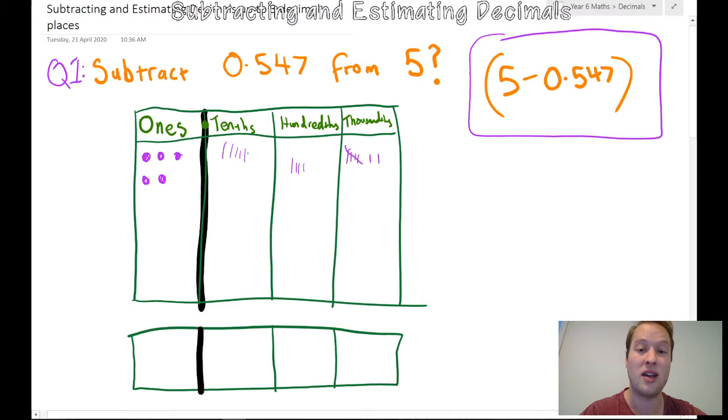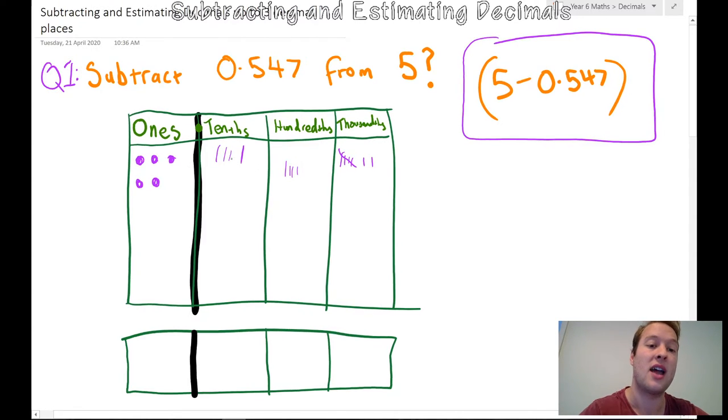So how am I going to take away five? I've got to remember my tallies. How am I going to take away five from here, four from here, seven from here when there isn't any? Well, I'm going to actually need to regroup. So let's do that.